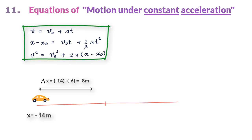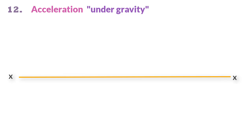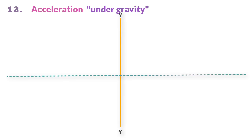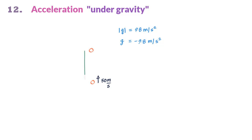Acceleration under gravity is a case of constant acceleration acting in the vertical direction. Instead of the x-axis, we take the y-axis as the reference, so plus y is the positive direction and minus y is the negative direction. The same sign notation applies to velocity and acceleration. The force of gravity always pulls a body downward, so gravitational acceleration always acts downward. The absolute value of g is 9.8 m/s², but we assign it a negative sign since it always acts in the minus y direction.